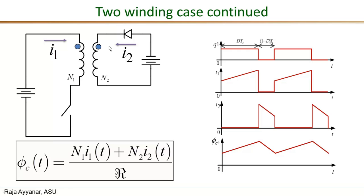For the situation here where both i1 and i2 are entering the dot, the flux due to these currents is given by this expression: the flux equals the total MMF over the reluctance, and the total MMF is N1 (primary turns) times i1, plus N2 times i2. The plus sign is because the currents are entering the dot in both windings. If the dot on the secondary side were at the bottom, it would be a minus sign. So the flux is the sum of the two MMFs divided by the reluctance.